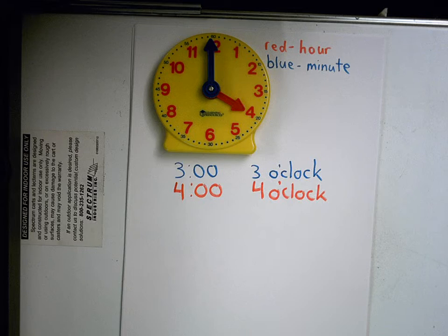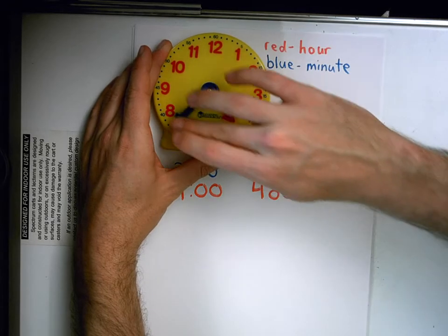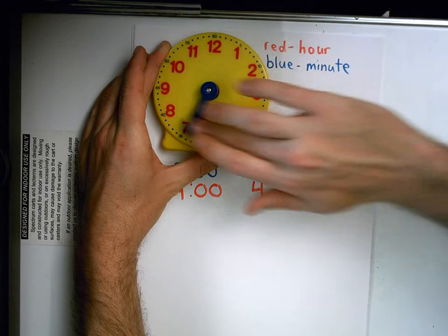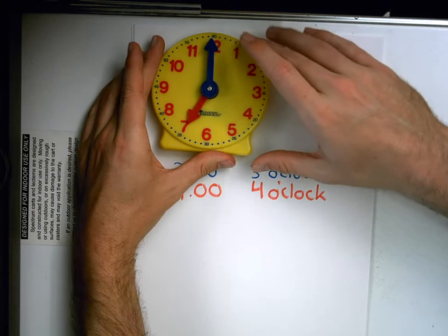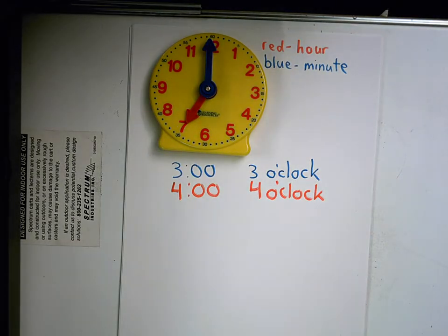This minute hand, I should say, will go around the clock three times if three hours have passed. Because every time it goes around, that's one hour, two hours, and three hours. And look, who can tell me what time it is now? What time is it now? Chad. Seven o'clock.